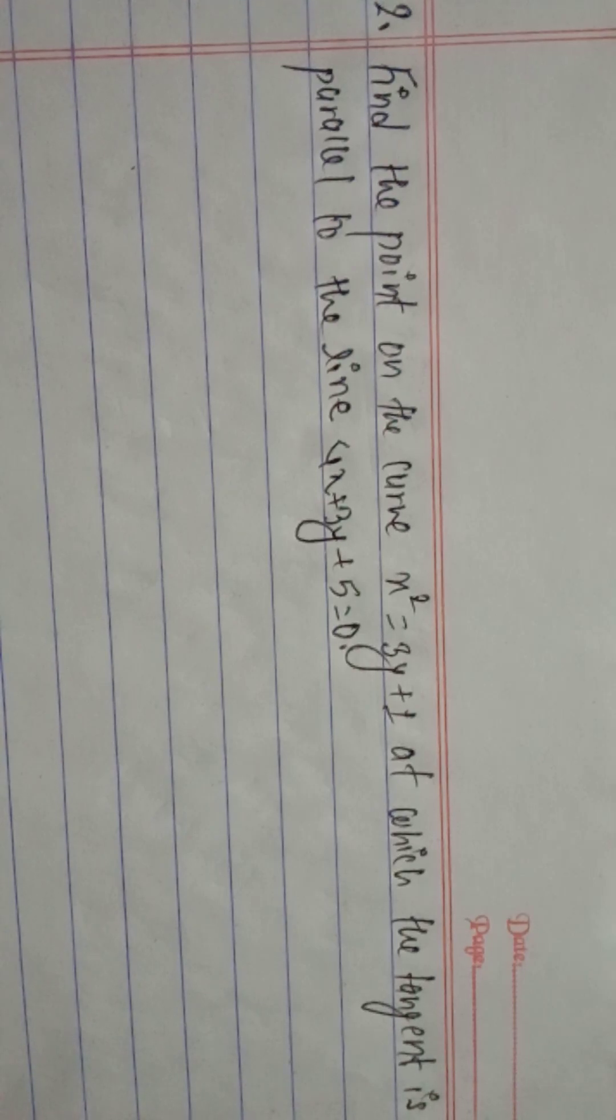Find the point on the curve x square equals 3y plus 1 at which the tangent is parallel to the line 4x plus 3y plus 5 equals 0.